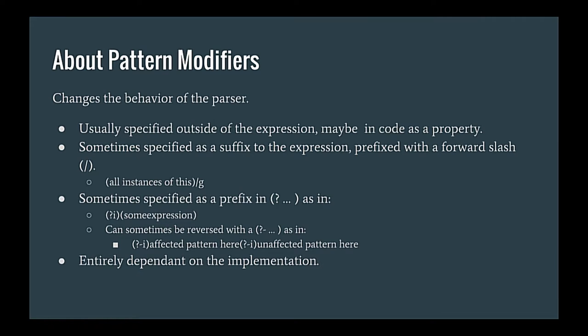Pattern modifiers. These are not part of your expression usually. Some implementations will ask you to tack them onto the end as text. But usually they're specified as a property in your library or some other place in your code. Or some are in line. So you can see that that first example has a slash G. RegEx 101 does that, I think. And the second one has a question mark I in parentheses. RegEx Buddy and my stuff are PCRE compliant. They do it that way. So you're going to have to look at the tools that you're using and figure out which way they want you to use pattern modifiers. But the pattern modifiers themselves, the letter that you use, are pretty universal.